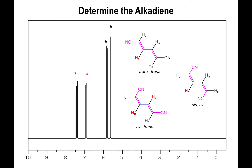So that molecule is not equivalent — you have four different hydrogens. Similarly, for the cis-cis molecule, if you do a 180° rotation on its own axis, HA will end up on HA and HB pointing straight right will end up pointing straight left, so it also contains two sets of equivalent hydrogens. What we've done is basically rule out two out of three molecules just based on the symmetry of the molecule. So now we know that we must be dealing with the cis-trans molecule.